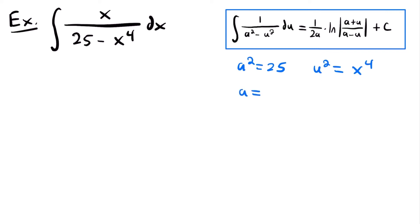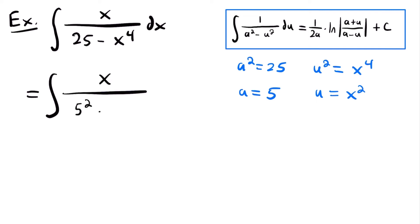So we'll have that a squared is equal to 25, and u squared is equal to x to the fourth power. And so if we take the square root of both sides of these equations to solve for a and u, we will have that a is equal to 5 — the square root of 25 is 5 — and u is equal to x squared, because the square root of x to the fourth power is x squared. And so we can more explicitly write out a squared minus u squared, and this function will better represent the function in our integration rule. So we'll have that this is equal to the integral of x divided by 5 squared minus (x squared) squared, times dx.